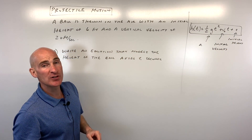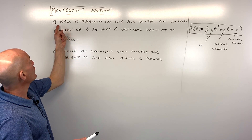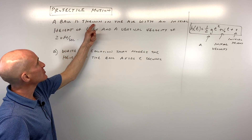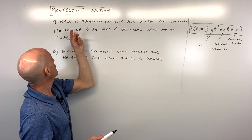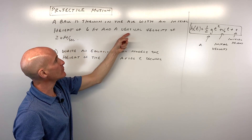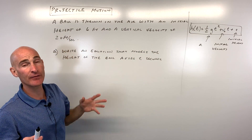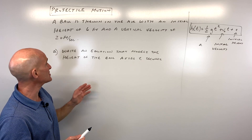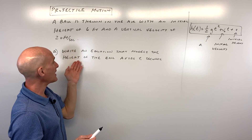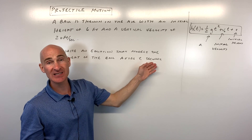Let's see if we can do this problem together — see if you can do it on your own as well. It says: a ball is thrown in the air with an initial height of six feet and a vertical velocity of twenty feet per second. The first part of this question says: write an equation that models the height of the ball after t seconds.